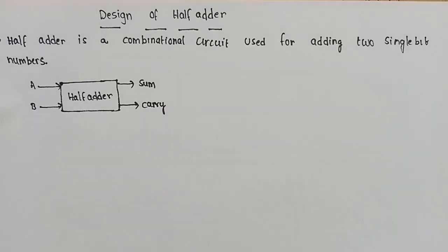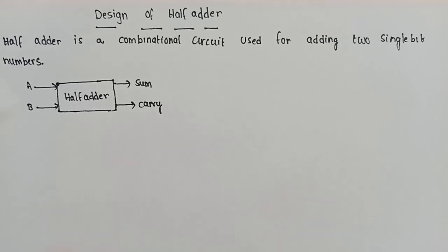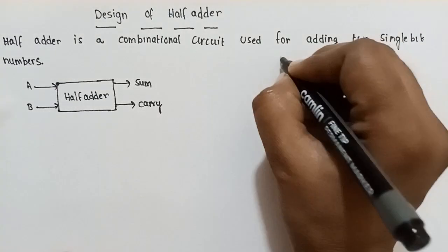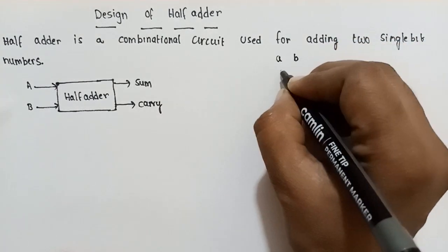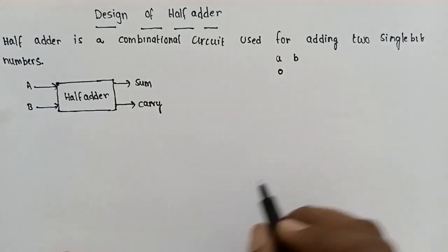The half adder is also a combinational circuit. We have discussed combinational circuits. It is used for adding two single-bit numbers. We are going to add two inputs, A and B. Each is a single bit — 1 bit.